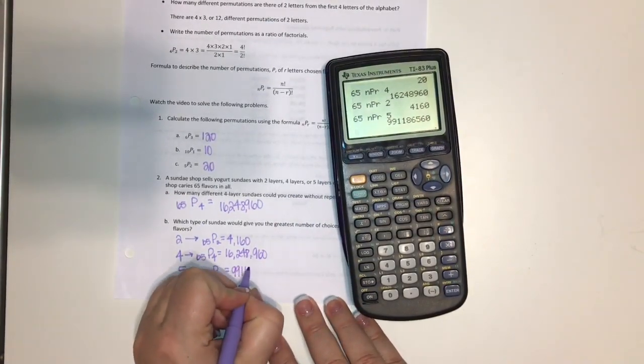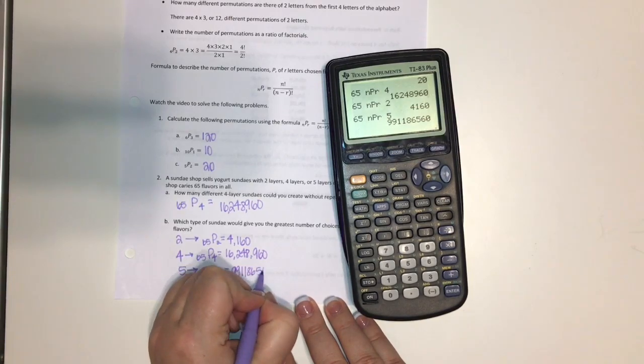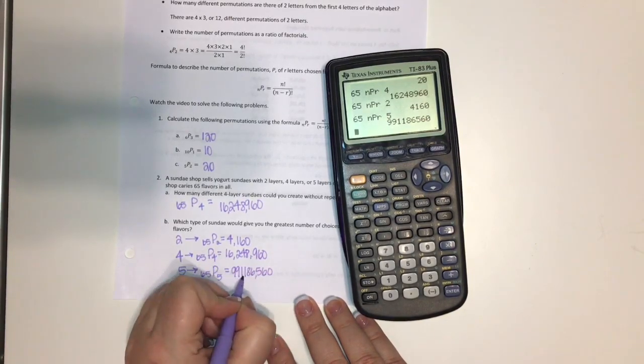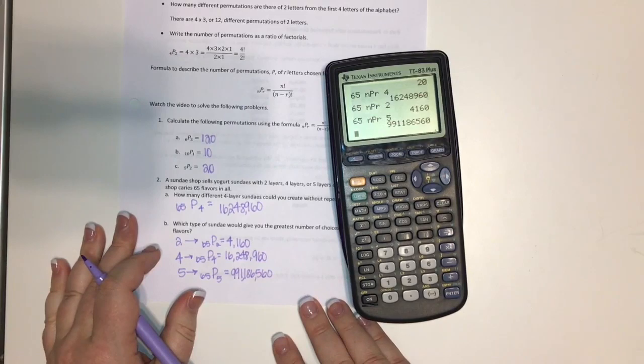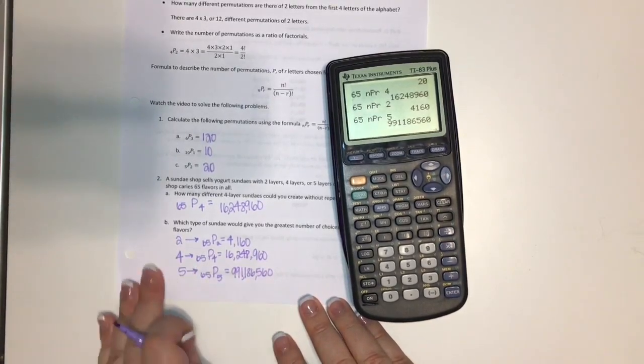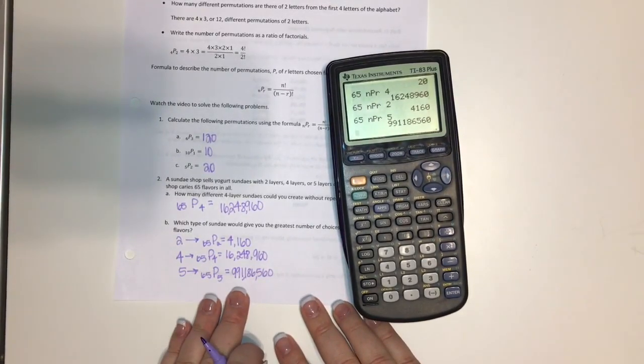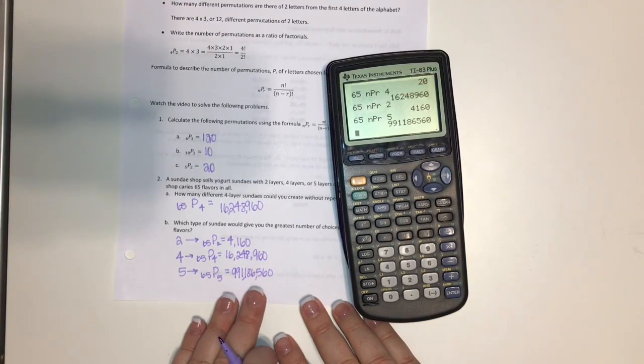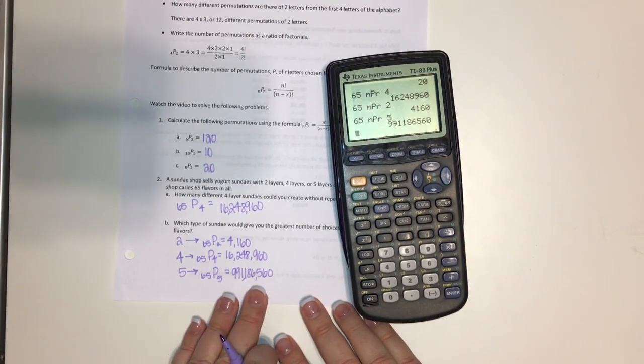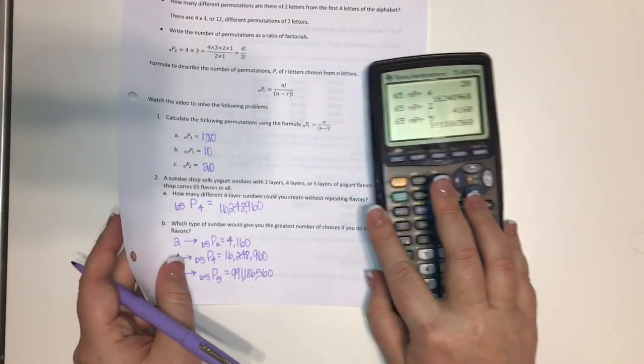Let's see, nine, nine, one, one, eight, six, five, six, zero. Put our commas in there. Yes, obviously a five-layer sundae would give us the most options. 991,186,560 different options.